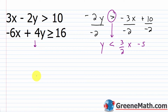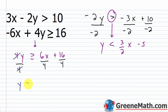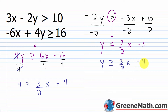For the second inequality, add 6x to each side: 4y is greater than or equal to 6x plus 16. Divide both sides by 4: y is greater than or equal to three-halves x plus 4. Now we see the same slope but different y-intercepts. This is a less than (shade below) versus a greater than or equal to (shade above). Will this system have a solution? No, it will not.